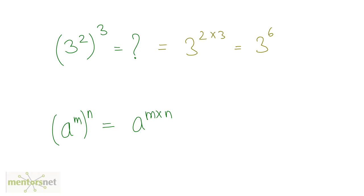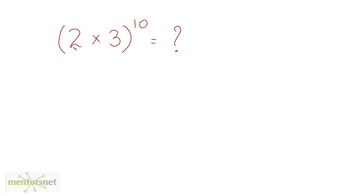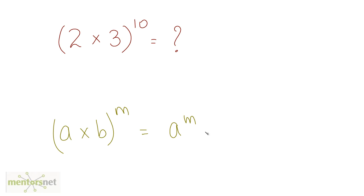The next law: if you have a times b, the whole raised to m, then it equals a raised to m times b raised to m. So for example, this expression will be equal to 2 raised to 10 times 3 raised to 10, and then you can solve it further.